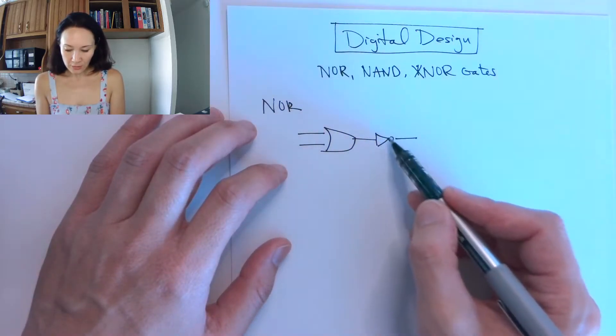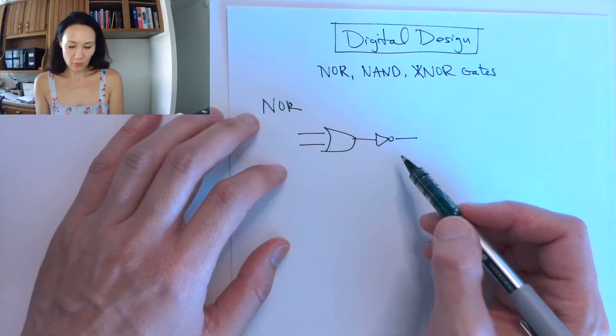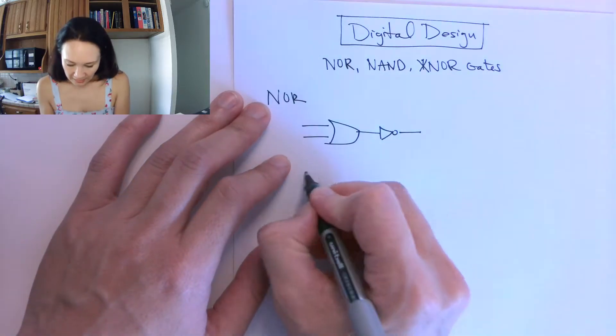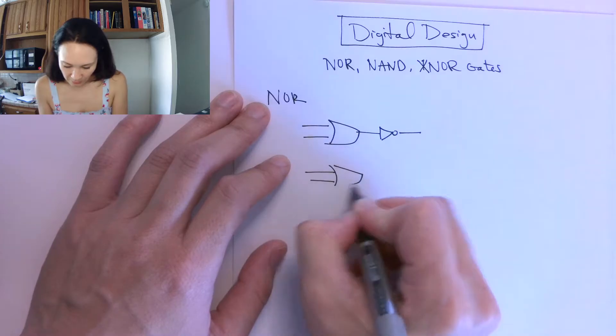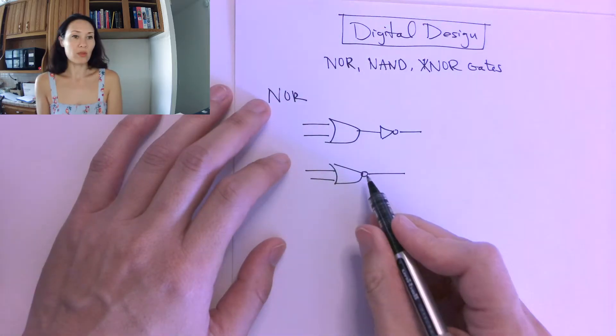As a little shorthand for this inverter, you see the bubble on the end of that inverter? We take that bubble and basically shrink the inverter down to the bubble. Our schematic symbol for the NOR gate looks like an OR with a bubble on the end.